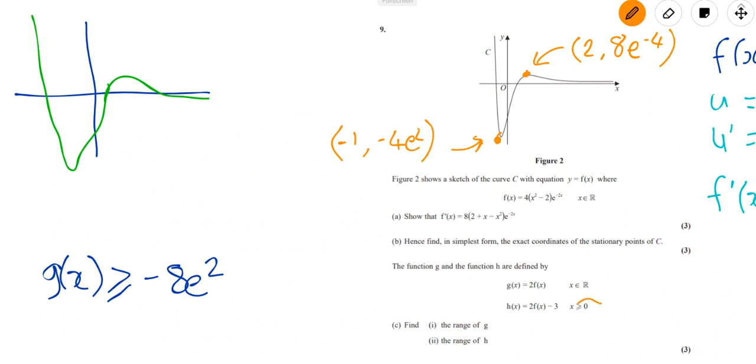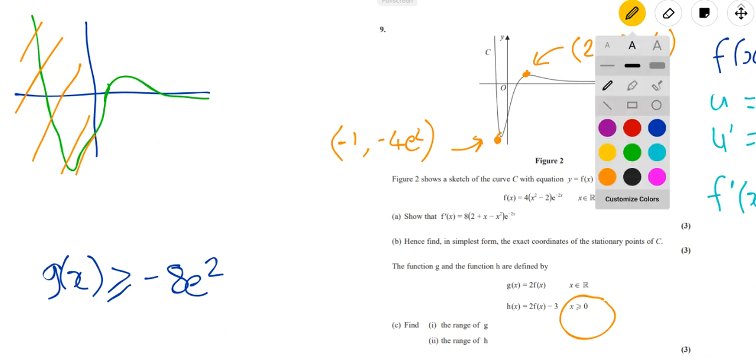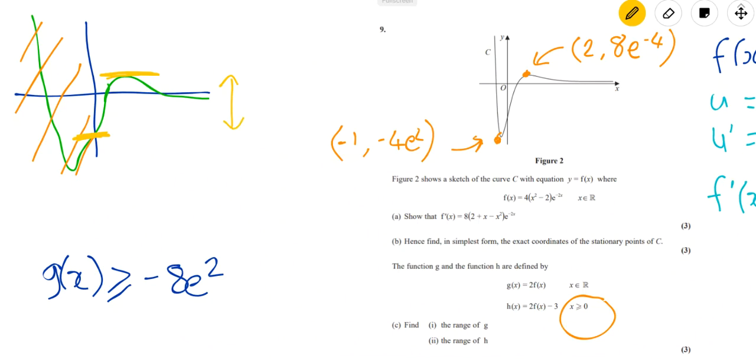Now just notice the domain here is x is greater than 0. It's actually cutting off this part of the graph. We're only interested in the positive x part of the graph. That's a bit tidier. So the range for h is going to be, the maximum is this point here, and the minimum will be this point here where it crosses the axis. That's the range. So we need to find those two values. What's the easiest one to get first?